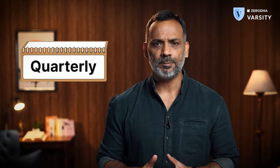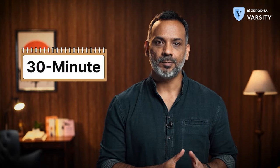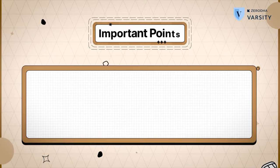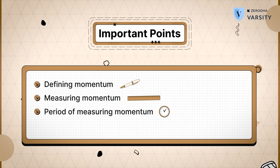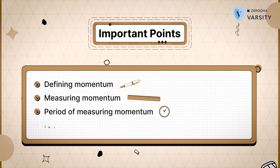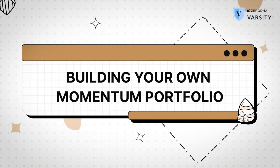Traders can define momentum across various time periods: daily, weekly, monthly, quarterly, or even yearly. For high-frequency traders, you can even define momentum on a 30-minute or one-hour basis. At this stage, I hope you've understood four important points: how to define momentum, how to measure momentum, how time period makes a difference, and the importance of trend when looking at momentum. With this in background, I will now proceed to explain how you can build your own momentum portfolio.